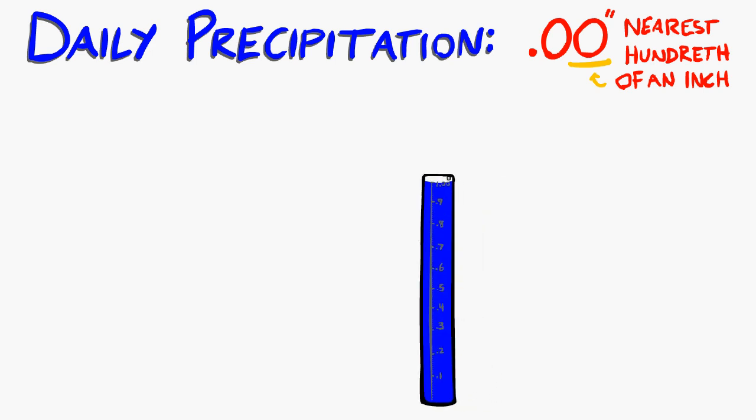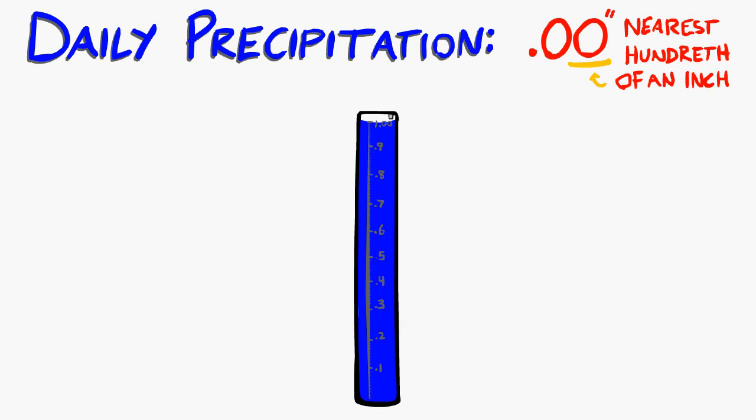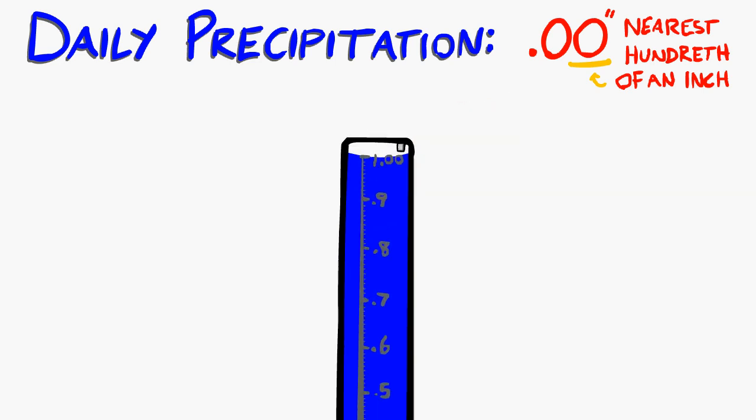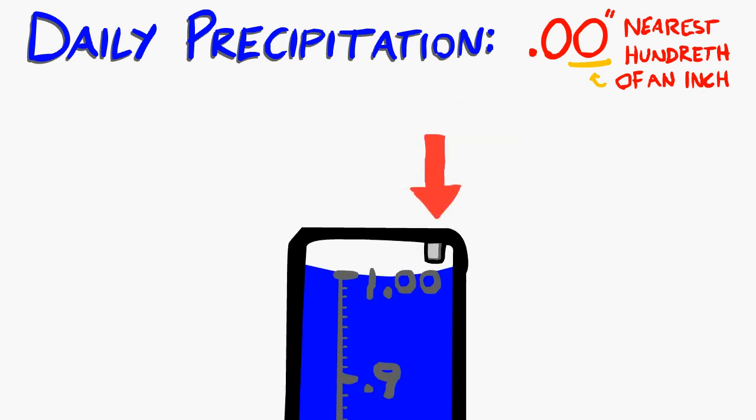One inch in the outer cylinder will fill up your inner tube all the way to the top, where it says 1.00 inch. Looking closely at your inner tube, you will notice a small notch at the top. This is for overflow, or when it rains more than one inch.